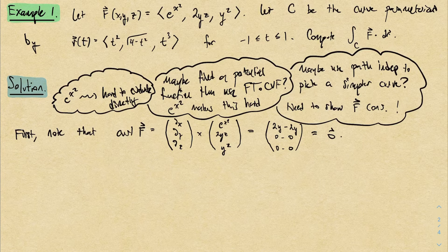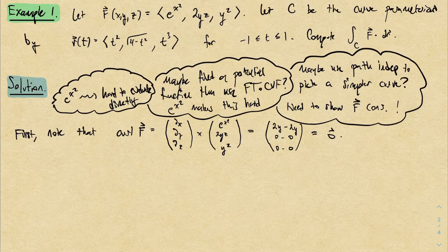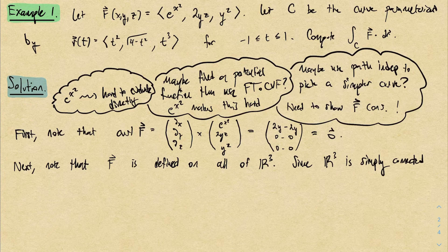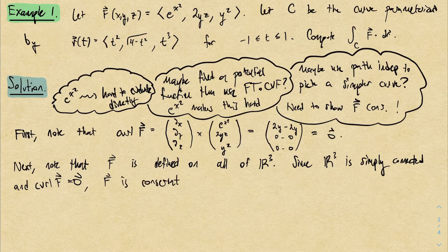We can't make any conclusions yet because we haven't specified a domain. Any time you talk about a vector field being conservative, you have to supply a domain. In this problem, we may as well take the domain to be all of R³ — the vector field is defined everywhere, so there's no reason to pick something complicated. R³ is definitely simply connected because any curve you draw in three-dimensional space can be contracted to a single point. So since the curl is 0, F is conservative on R³.